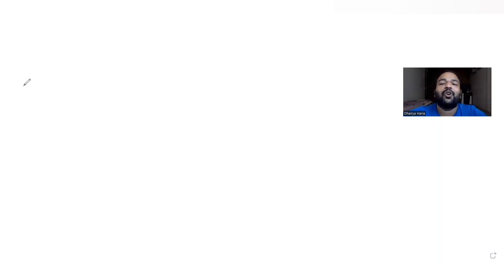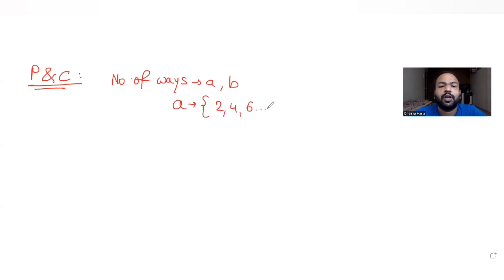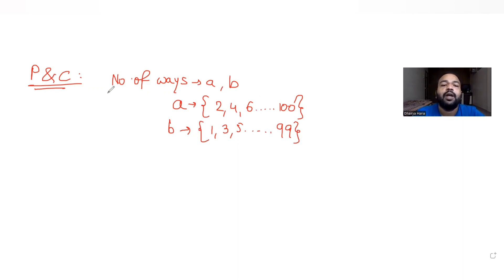Hi guys, I hope you are all doing well. Today's question is from the topic of permutations and combinations. The question tells us we need to select two numbers a and b: list A consists of even numbers from 2 to 100, and list B consists of odd numbers from 1 to 99.